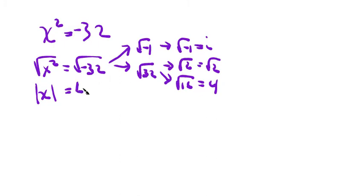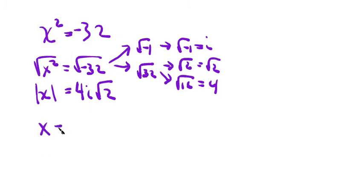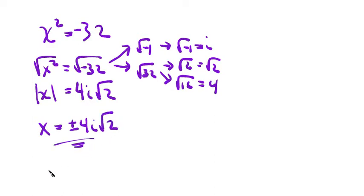Putting these in order: the nice number comes first, the letters come second, and then the square root always comes last. To get x out of the absolute value, we understand that x could have originally been positive or negative, so x is equal to positive or negative 4i root 2. And there is our solution.